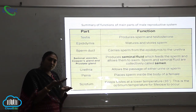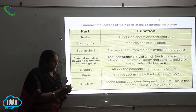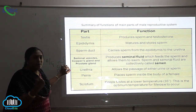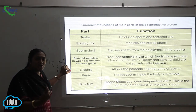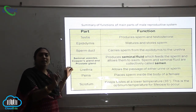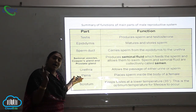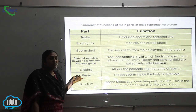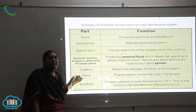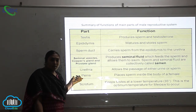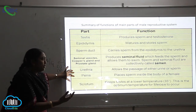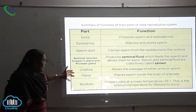The urethra is present inside the penis, which is the next part. The penis places the sperms inside the body of the female — it is the external genitalia of the male reproductive system. This part is seen not only in humans but also in other highly evolved mammals like monkeys, cheetahs, dogs, buffaloes, and horses.